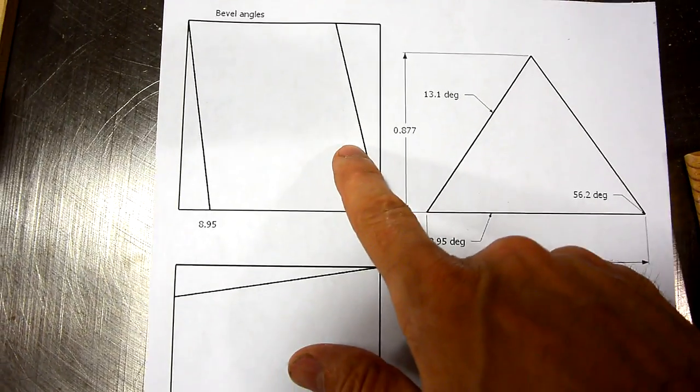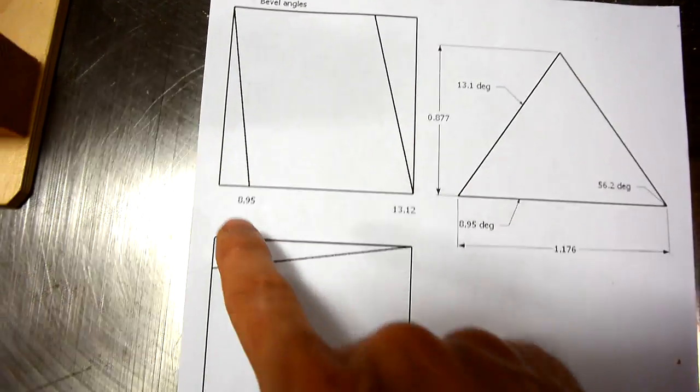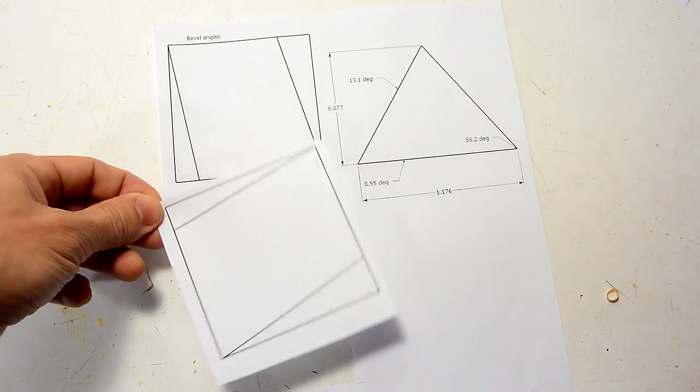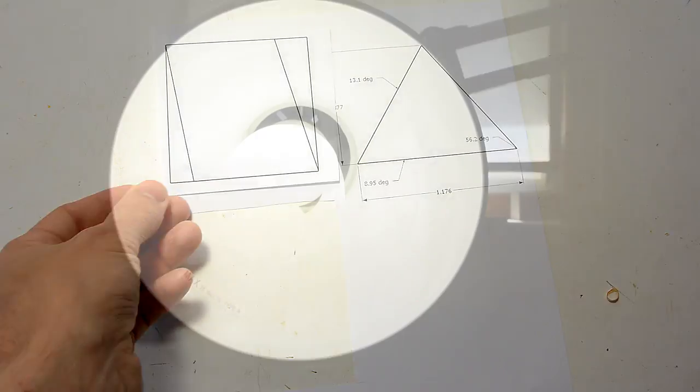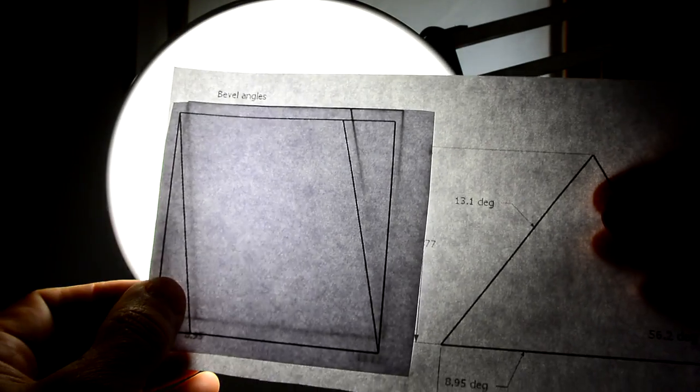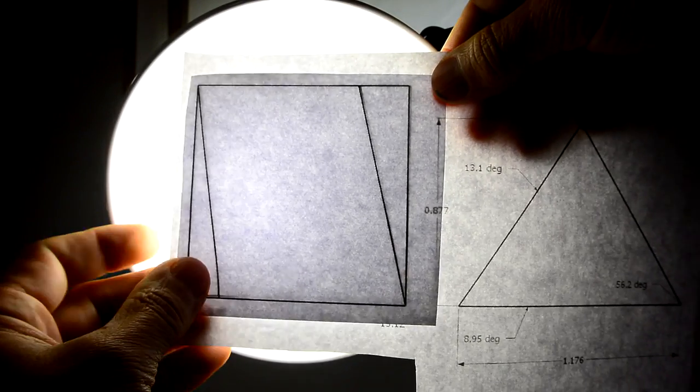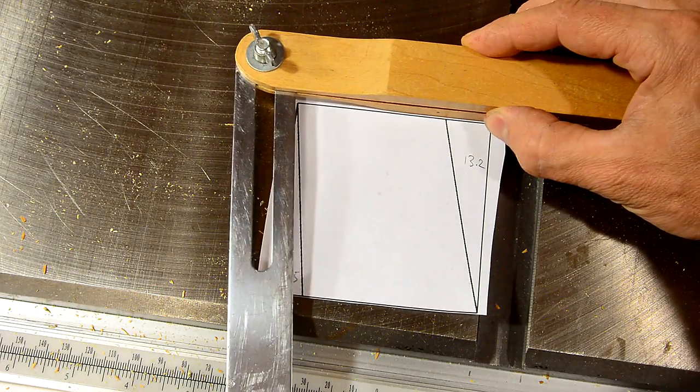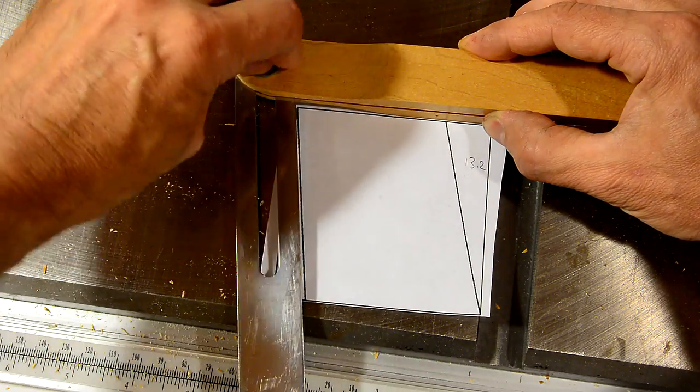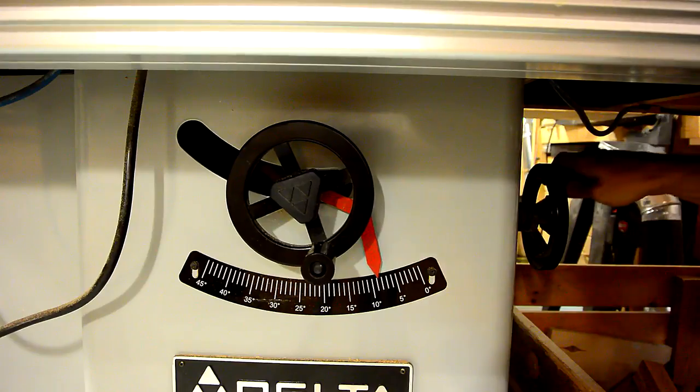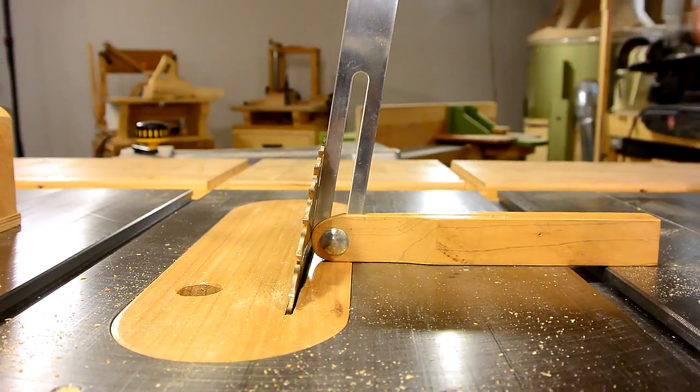I drew my bevel angle in CAD on a square and I printed that, then rotated it 90 degrees so I can make sure my printout has no distortion. Holding this one on top of the other one, rotate it 90 degrees, I can see the square lines up perfectly. Close enough.